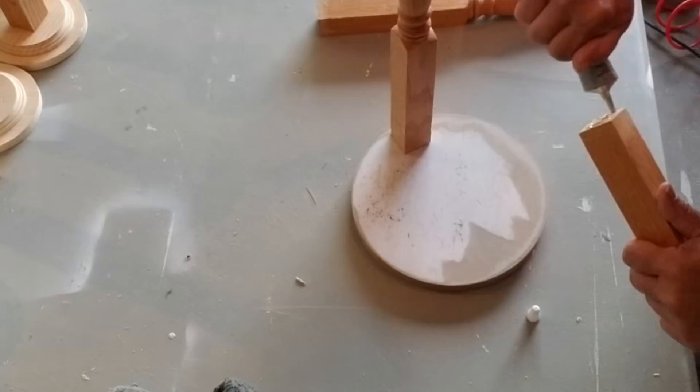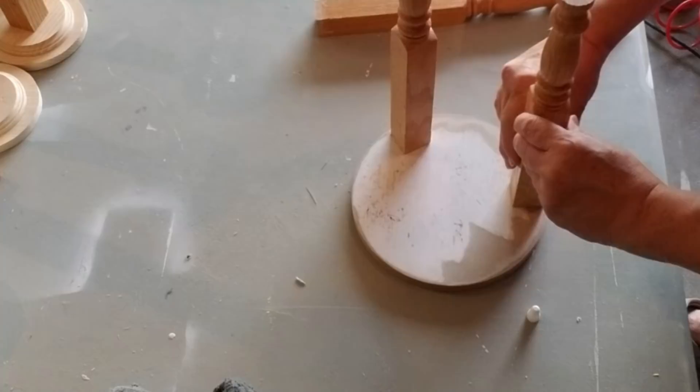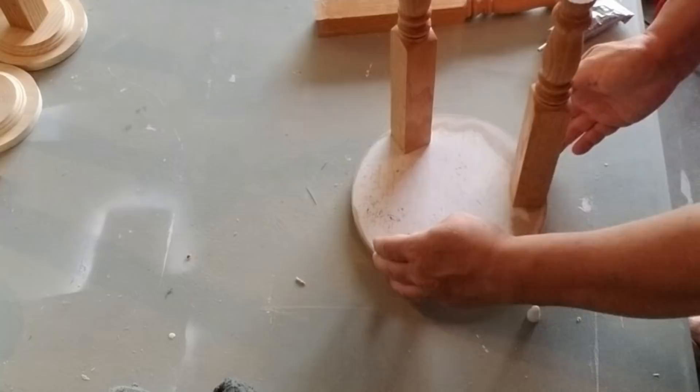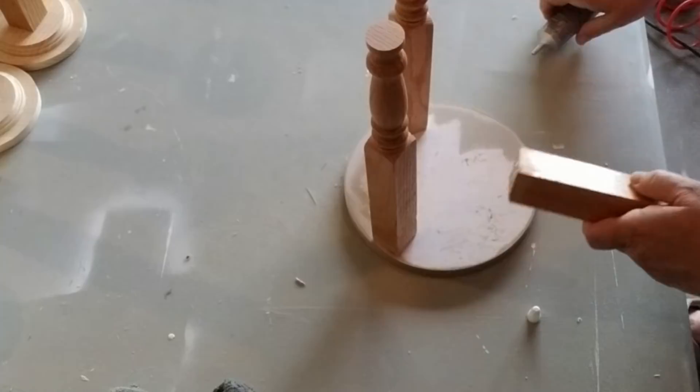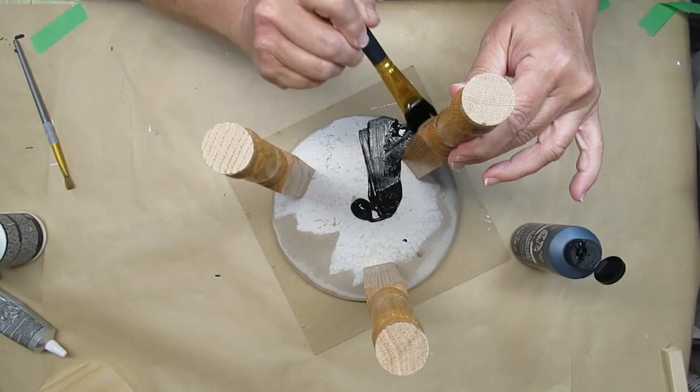Once I was able to flip it over without the little legs falling off, I used my nailer to hold it in place. If you don't have a nailer, you could definitely pre-drill some holes and just add a screw. Make sure that you sink it below the level of the wood circle because then you can just add a little bit of wood filler or some spackle and smooth out the top.